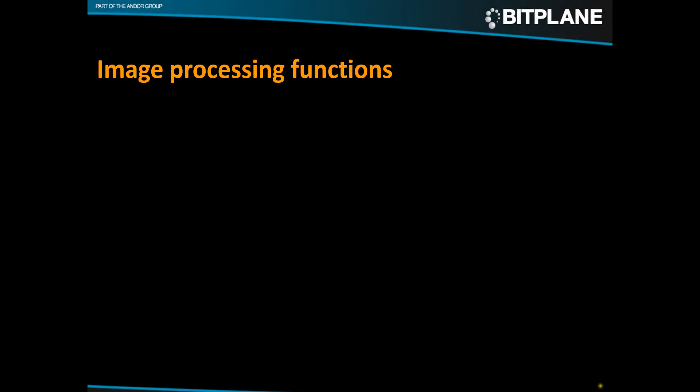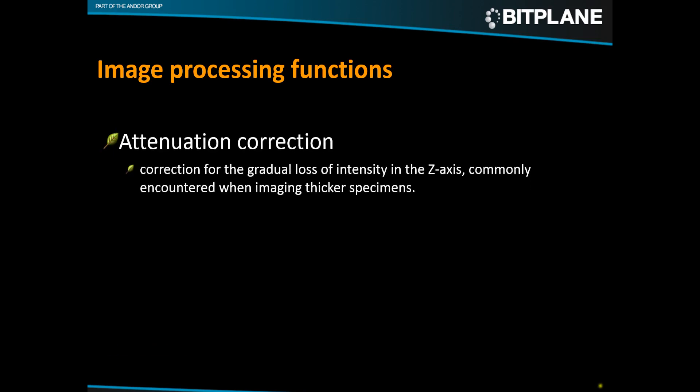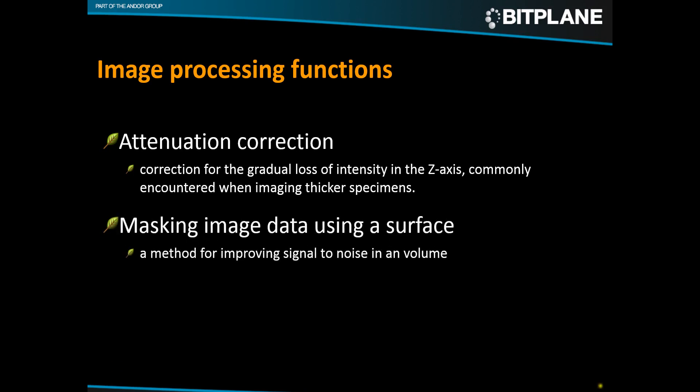I'm going to be focusing on two image processing functions in particular. The first is an attenuation correction, which allows you to correct for the gradual loss of signal or intensity in the z-axis. The second is a masking function using a surface, which allows you to improve your signal-to-noise in a volume, making the visualization and analysis of that data easier.